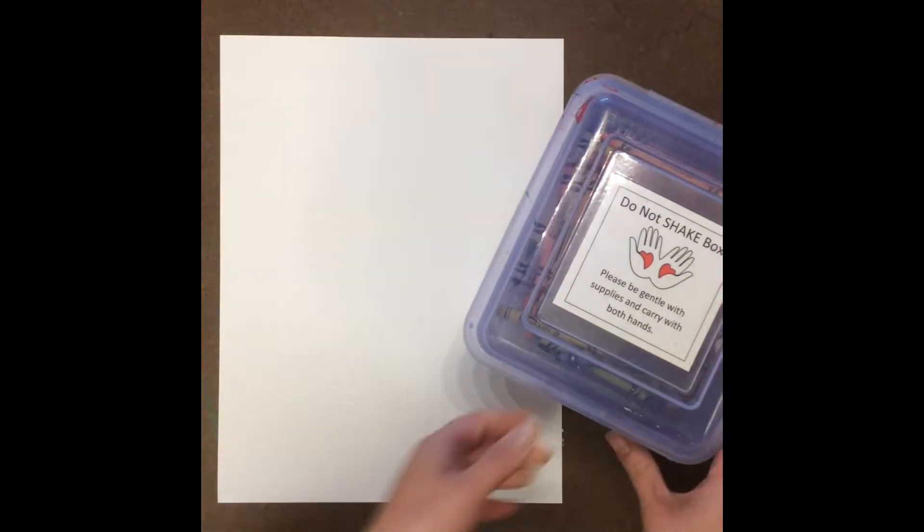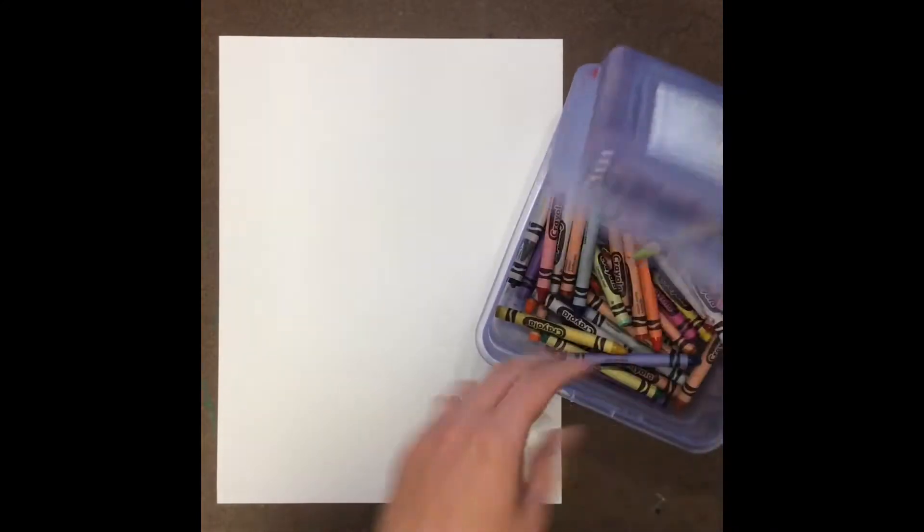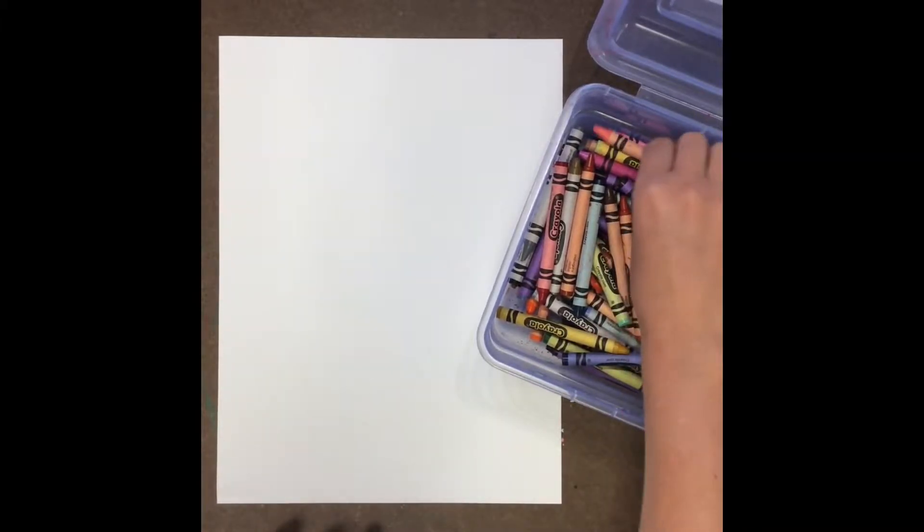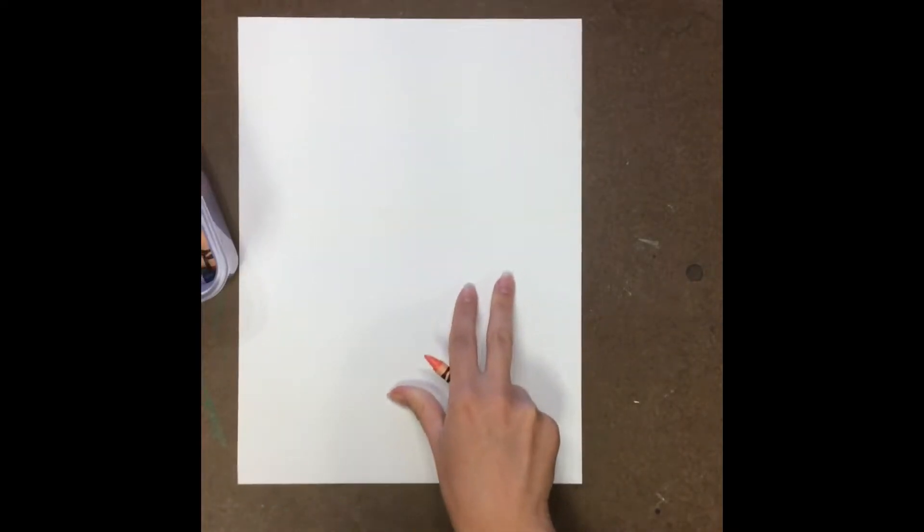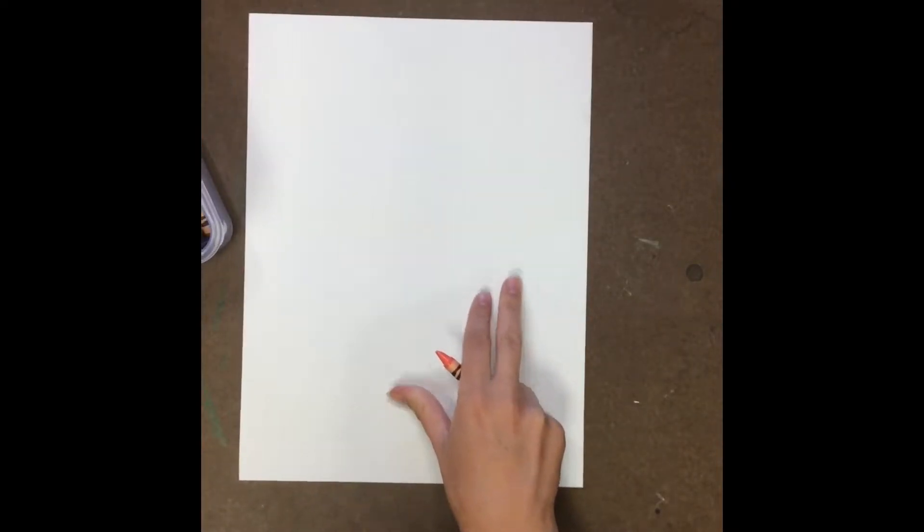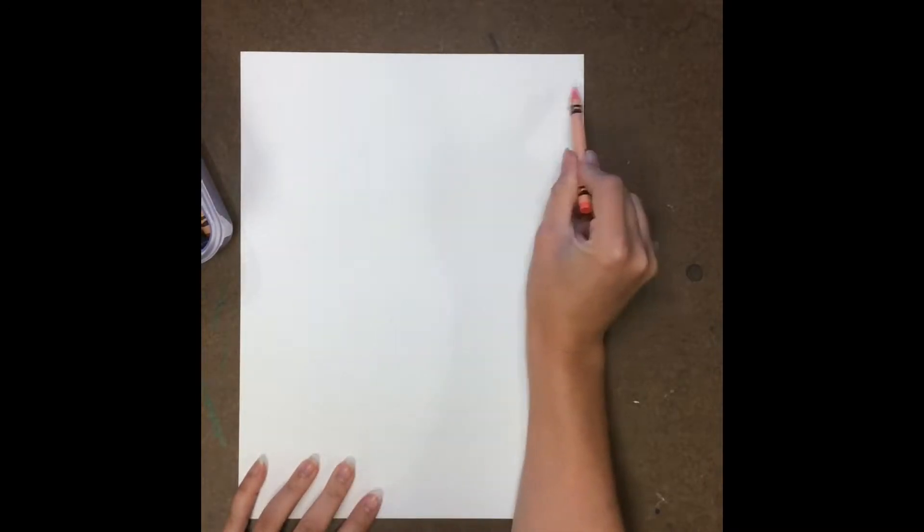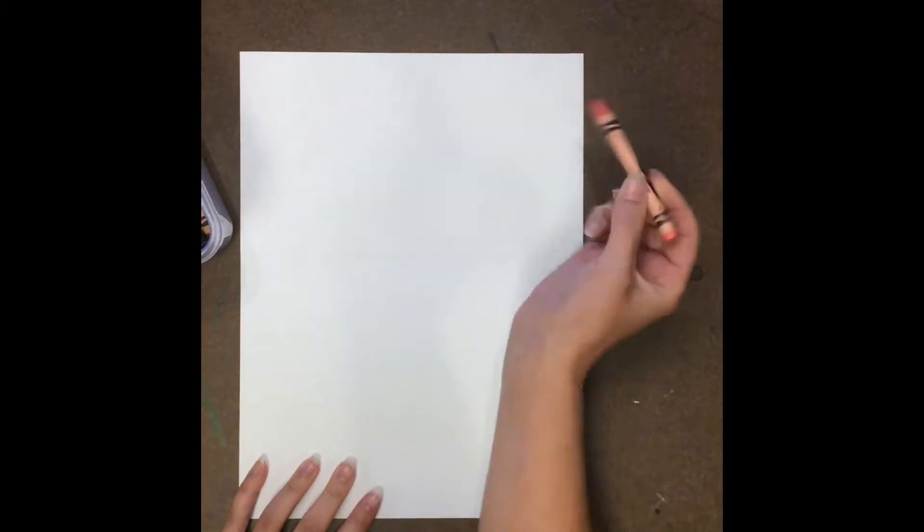So we're going to try to use lines in as many different ways as we can on our paper. We're going to start by using some crayons today, and we can use any type of crayon color that we like. Now we're going to create our lines in a horizontal direction, so that means they're going to go across our paper like so.